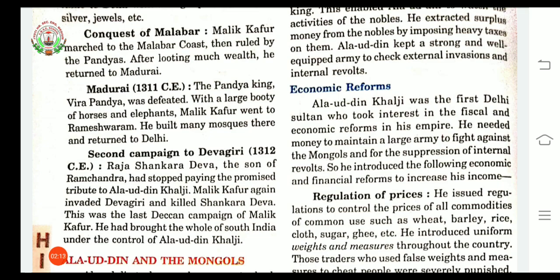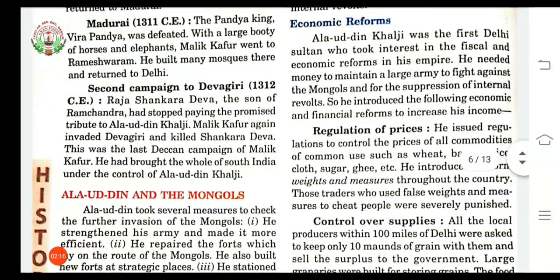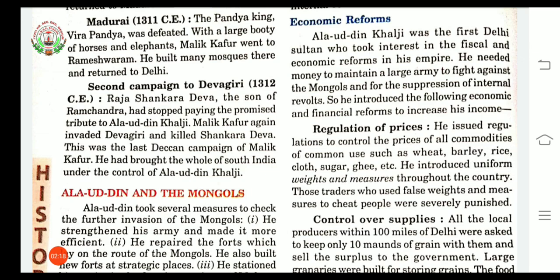The first reform is regulation of prices. Regulation means a rule made by any authority. Alauddin issued regulations to control the prices of all commodities of common use. For example, raw materials and agricultural products that can be bought and sold — barley, wheat, rice, sugar, and cloth are a few examples of commodities used by the people.